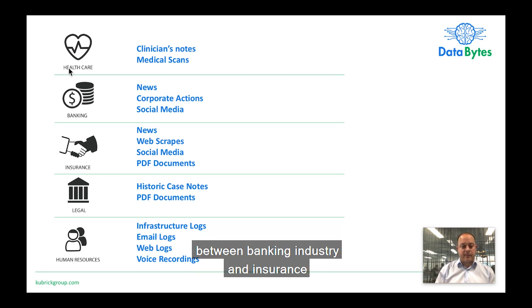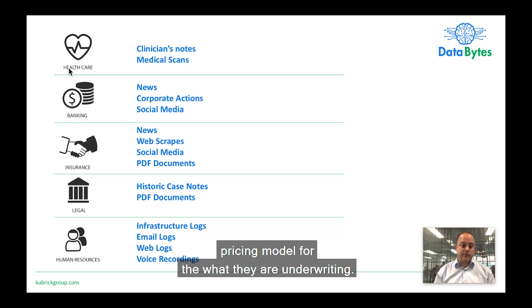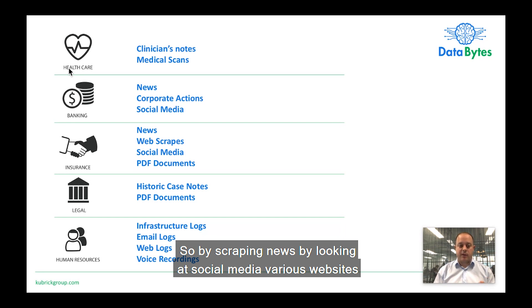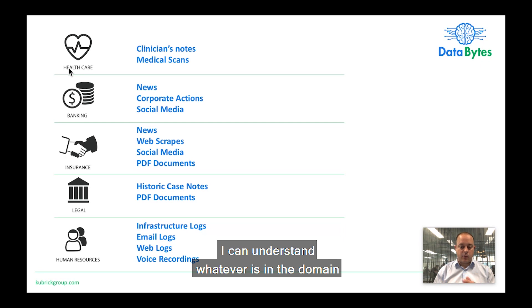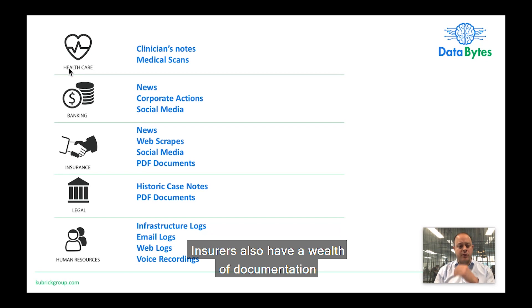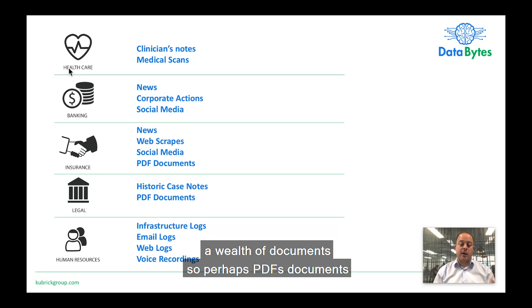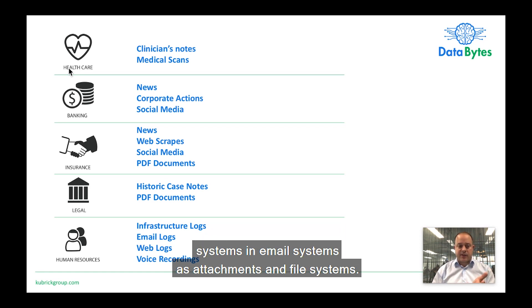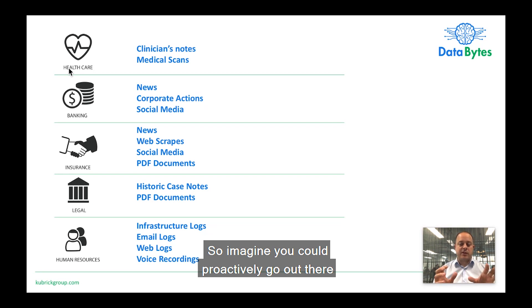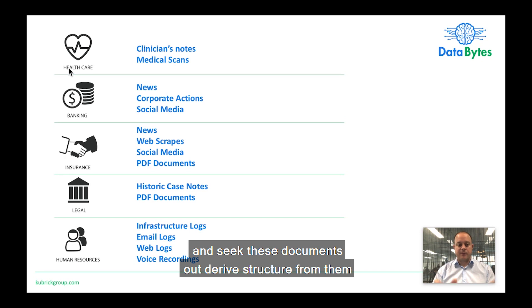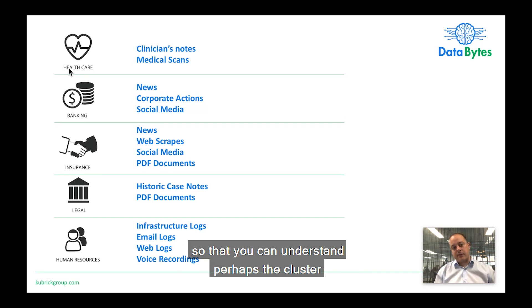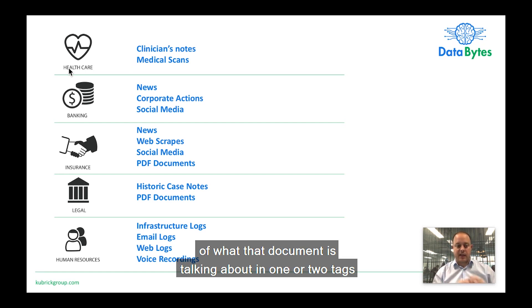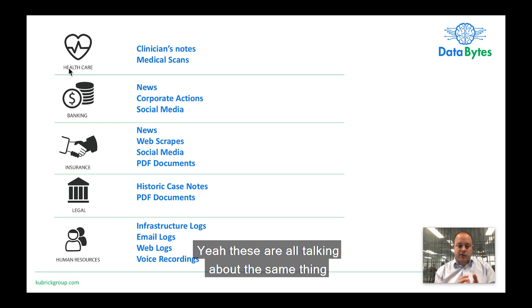There's a lot of crossover between the banking industry and insurance as well. Underwriters are going to want to look at similar information so that they can produce an accurate pricing model for what they are underwriting. By scraping news, looking at social media and various websites, they can understand whatever it is in the domain they're trying to price more accurately. Insurers also have a wealth of documents — perhaps PDFs — existing in document management systems, email systems as attachments, and file systems. Imagine proactively going out there to seek these documents, derive structure from them, maybe tabular or free text, and pass that into natural language processing so you can understand perhaps the cluster of what that document is talking about in one or two tags. Then we can cluster our documents together.